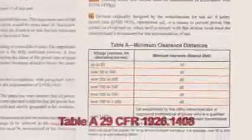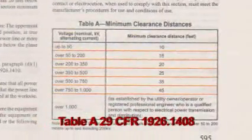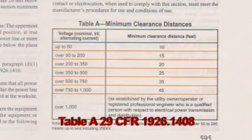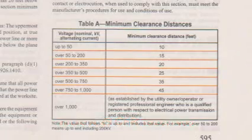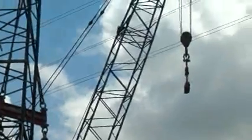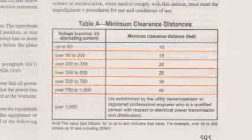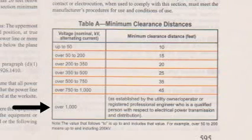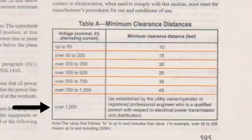Consult Table A in 29 CFR 1926.1408. In addition, if the line voltage is over 1,000 kilovolts, a registered engineer must determine appropriate distances.